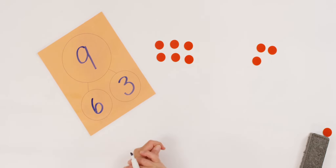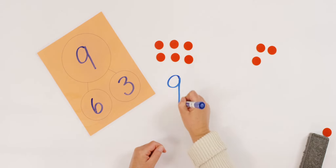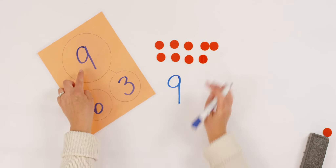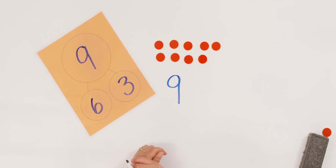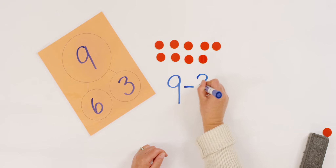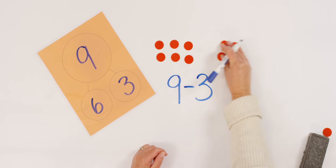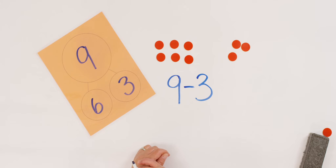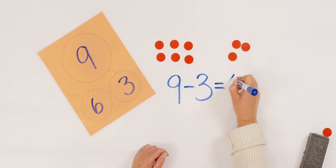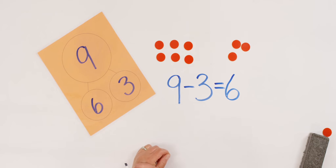Now let's write it. What is our whole? Nine. I had nine froggies all together, and it shows you right there. How many jumped in the pond? Three. So I use the minus sign to show that three went away — three jumped in the pond. And how many are left? Yes — six. Did you write this too? Nine minus three equals six. Or nine take away three leaves me six.